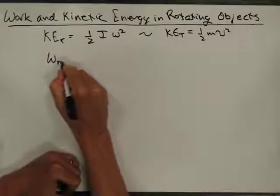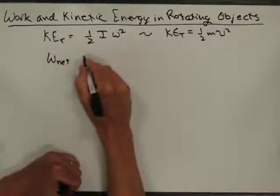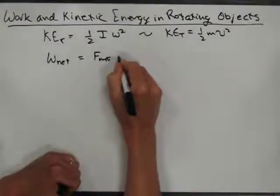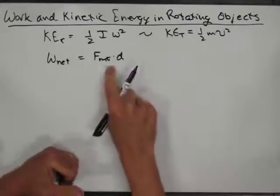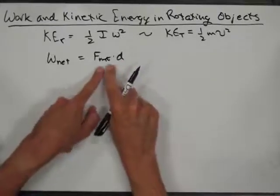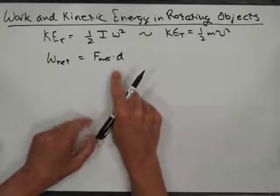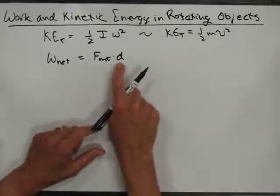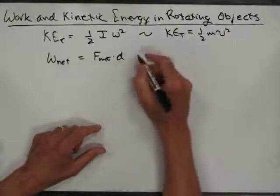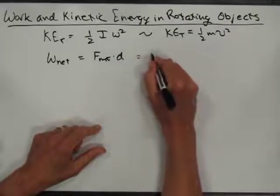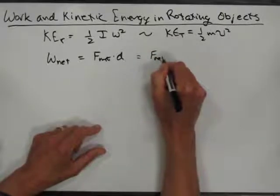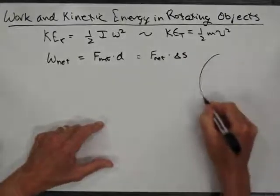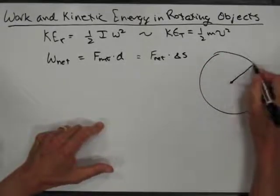When we talked about work, we said the net work done is equal to the net force times the distance. We also had an angle theta in there, but for now we'll say the distance is moved in the direction of the object, so we'll leave the cosine of the angle out. For rotating objects, we'll say the work done is the net force times delta s, where delta s is the distance you moved rotationally.